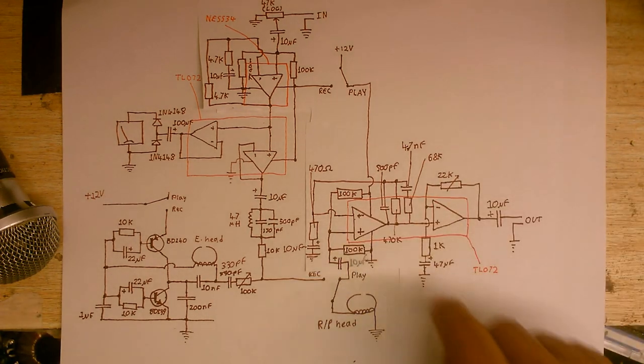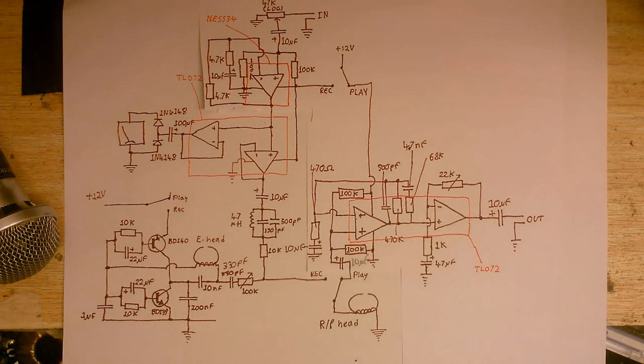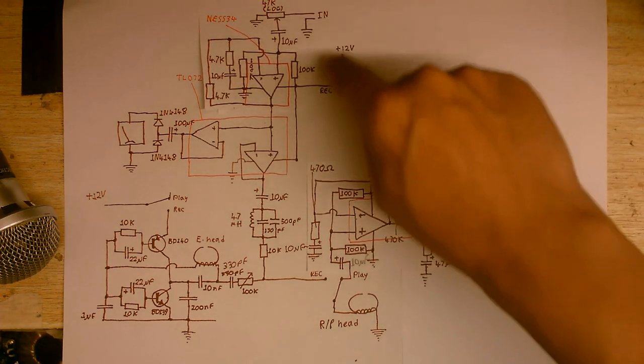And on the feedback, instead of connecting this resistor directly to ground, I've put a little capacitor there, because we only want to amplify the AC, we don't want to amplify DC. And I've done the same here as well.